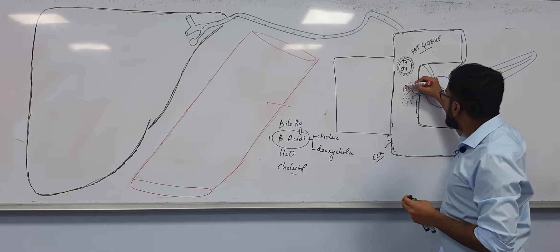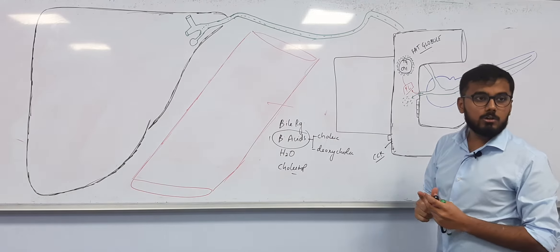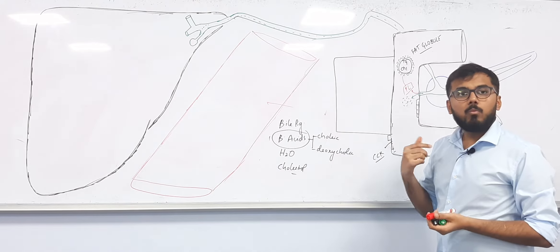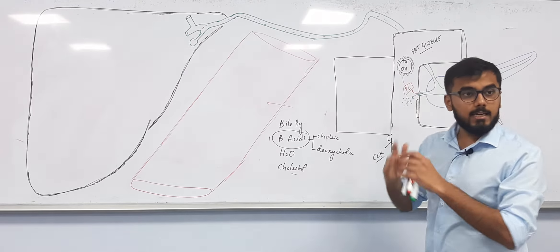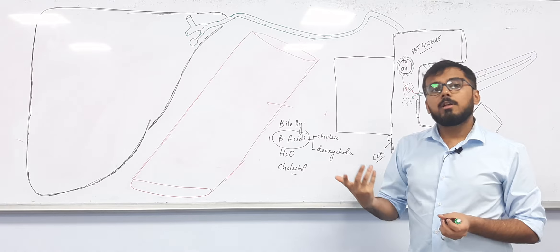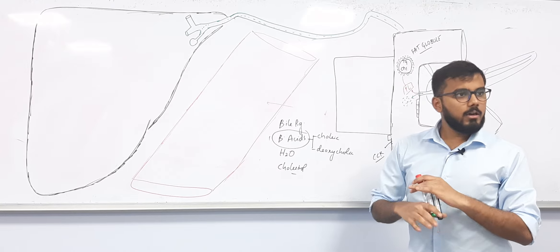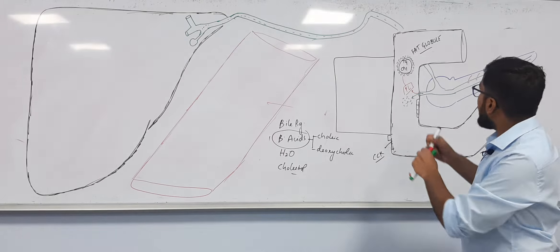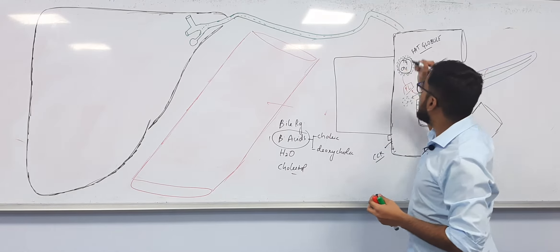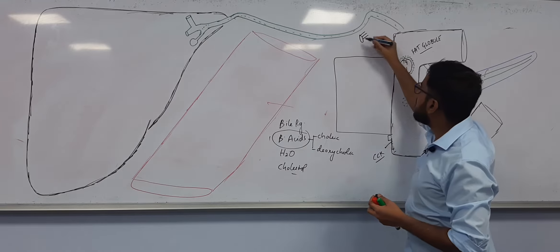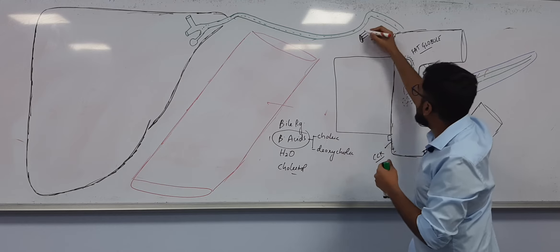Pancreatic lipase (PL) enters the fat globule and breaks down the triglycerides — it does not touch the cholesterol. Pancreatic lipase is a weak enzyme; out of 100 triglyceride molecules, it can only break down around 40 to 50.